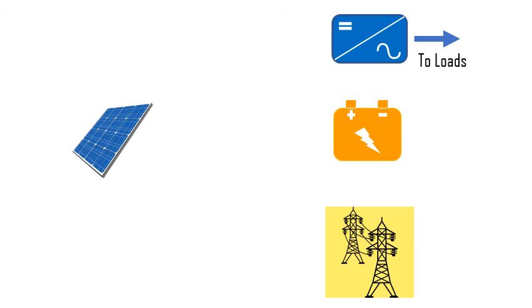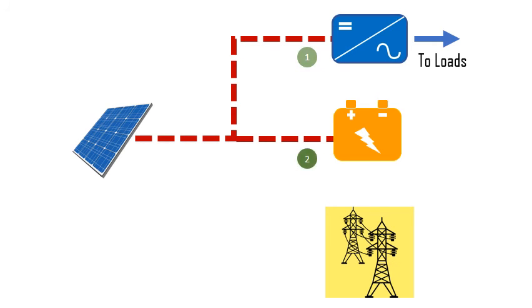The inverter is configured in such a way that the loads receive the first priority, because obviously the household appliances need energy first. The second priority goes to the battery, so that the householder can use the energy from the battery when the sun is down.